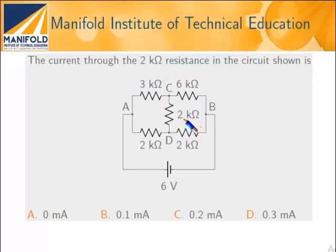We need to find the current through the 2k resistor. This is a 6 volt source, so I will begin by solving this using Thevenin's theorem. First, I will open the circuit.